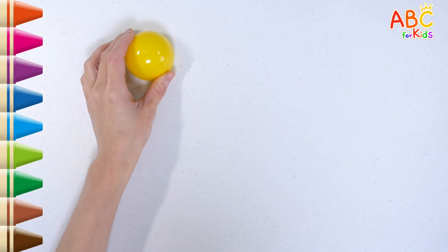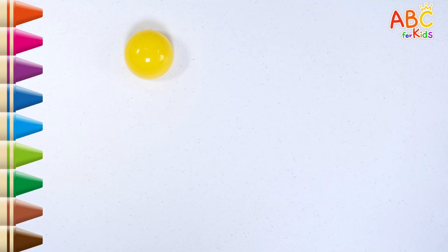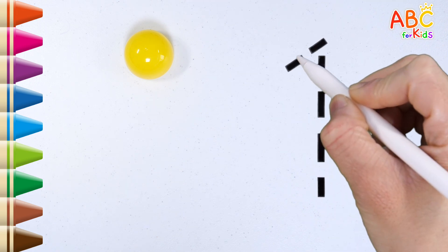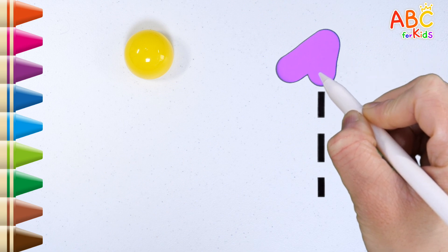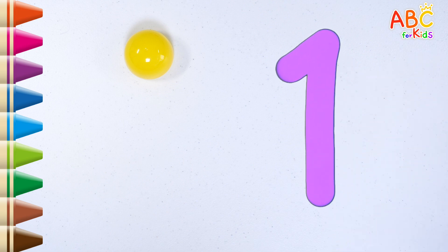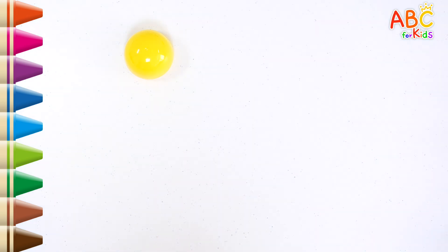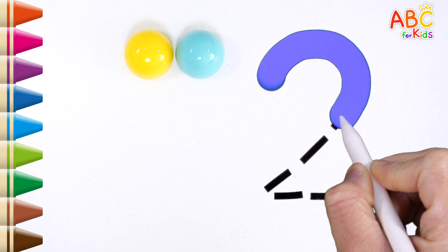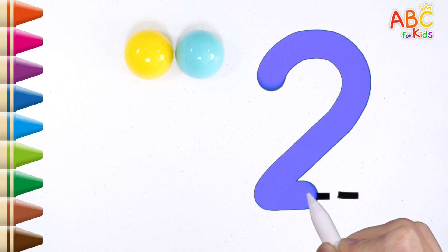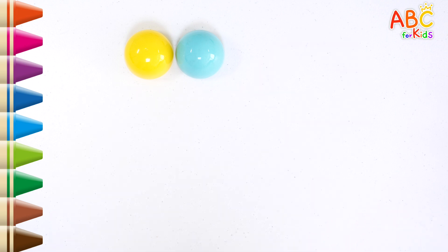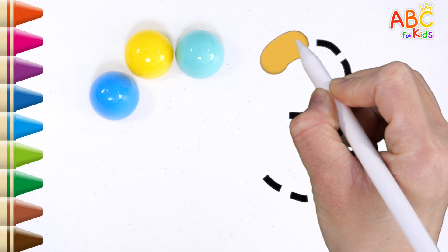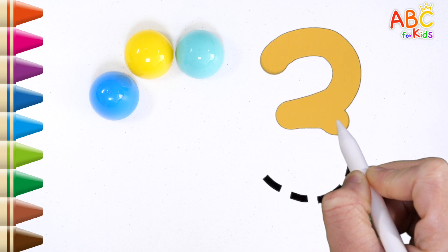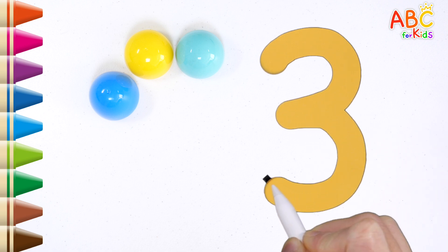Let's count the eggs one by one and write the number along the dotted line. 1, 2, 3.